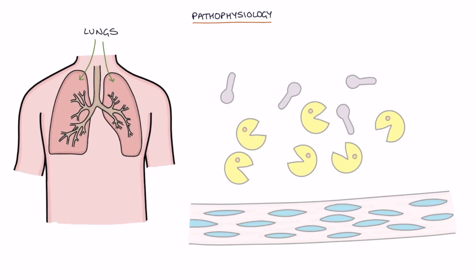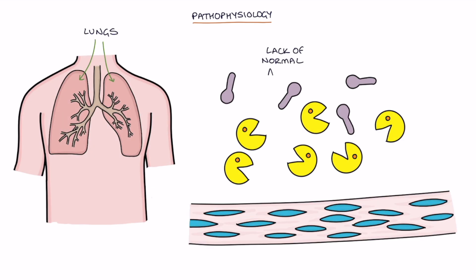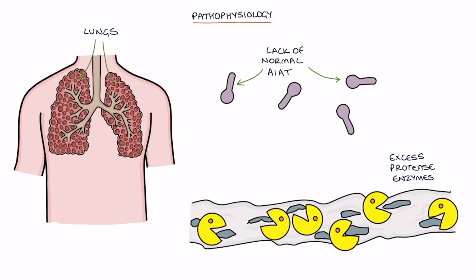In the lungs, the lack of normal functioning alpha-1 antitrypsin protein leads to excess protease enzymes attacking the connective tissues. Destruction of the elastic tissue in the lungs leads to bronchiectasis and emphysema. Smoking dramatically accelerates this process.